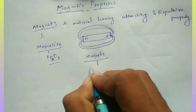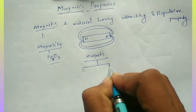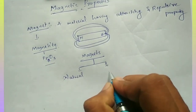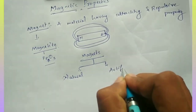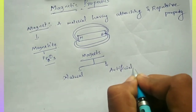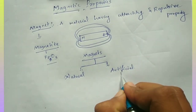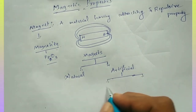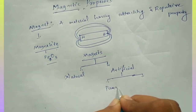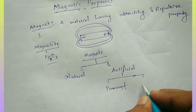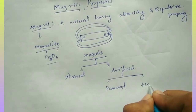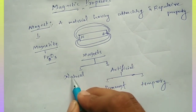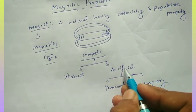We can classify magnets into two types: one is the natural magnet, and the other one is the artificial magnet. In artificial magnets, we classify them into two: one is the permanent magnet and the other is the temporary magnet.